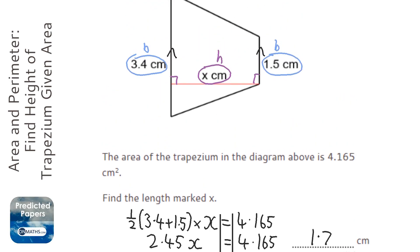Now I can go back and check that that works. I'm going to do 0.5 times brackets 3.4 plus 1.5 close brackets times 1.7, and I get the answer of 4.165, so I know it's correct.